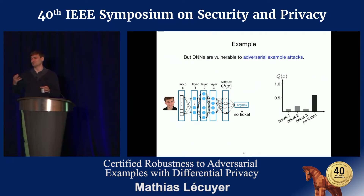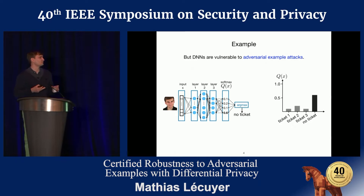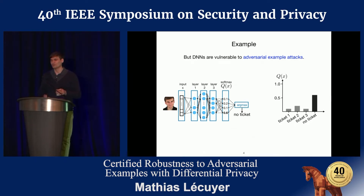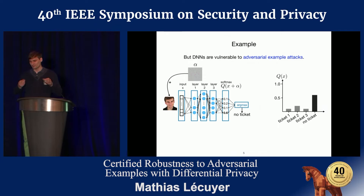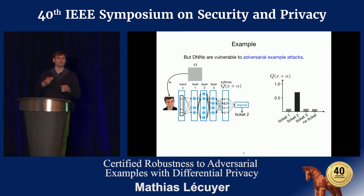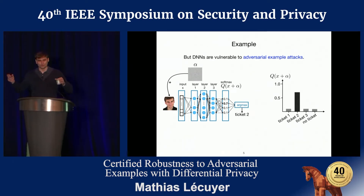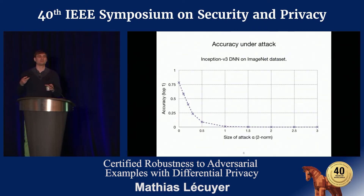However, it's been shown time and again that deep neural networks are very vulnerable to a type of attack called adversarial examples, in which the attacker makes a small change to the input — maybe some very light makeup I designed, or a hat that casts a special shadow on my face. This very small change triggers a drastic change in the scores given by the neural net.